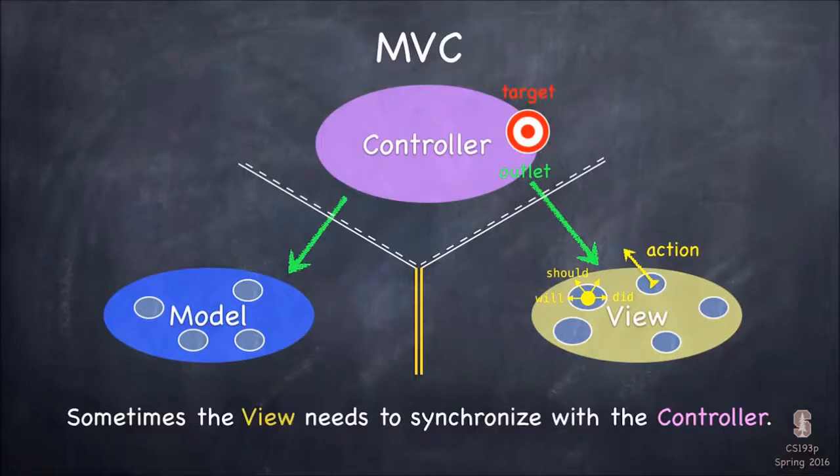Also, maybe the view, like the scroll view, needs to make sure it's okay to do something. Like if the scroll view says, should I allow vertical scrolling right now? Maybe it wants to ask the controller that. So you have a lot of messages that have words in them, like should, will, and did. That the minions wanna ask questions of the controller, involve the controller.